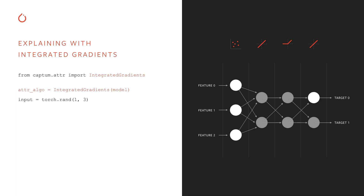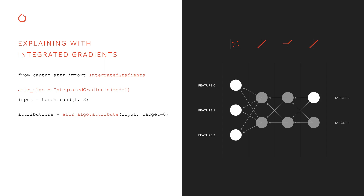We create an instance of integrated gradients using the forward function of our model and define our input as a random tensor. To perform attributions, we call attribute on the algorithm by providing our inputs and a target index. We can also provide a baseline; in this case I chose to use the default zero baseline. Integrated gradients performs forward and backward passes and computes the path integral of our gradients from baseline to input. The returned attributions have the same shape and dimensionality as the inputs.